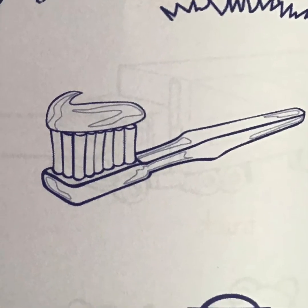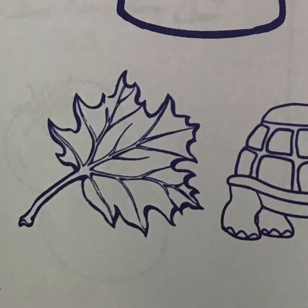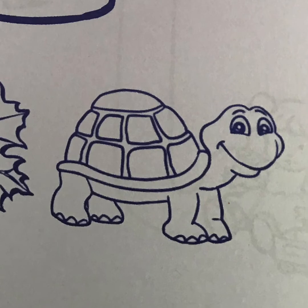Toothbrush — do you hear the sound t in the beginning? Yes. Toothbrush. A kettle. A leaf. A turtle — do you hear the sound t in the beginning? Yes. So you're going to color the turtle.